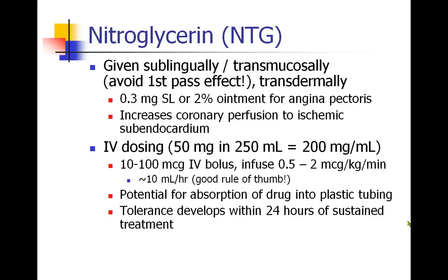In the operating room, we give it IV. It comes in a bottle, usually 200 micrograms per milliliter. An IV bolus of nitroglycerin — you should always start very low because people can have a pretty profound effect. I'll often start with 10 or 20 micrograms, especially in a sicker anesthetized patient. Once you've seen their response, you might go up to 50 or 100 microgram boluses. The long-term goal is usually to start an infusion, often between 0.5 and 2 micrograms per kilogram per minute. A good rule of thumb is to start at 10 mils per hour and titrate.